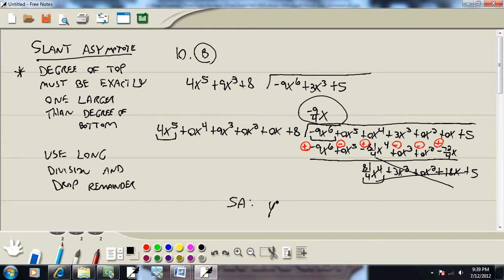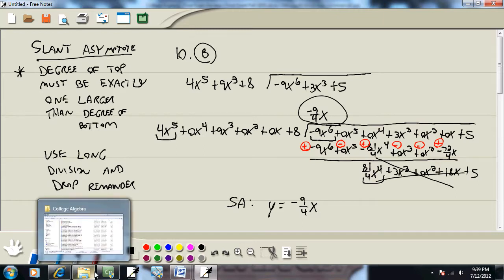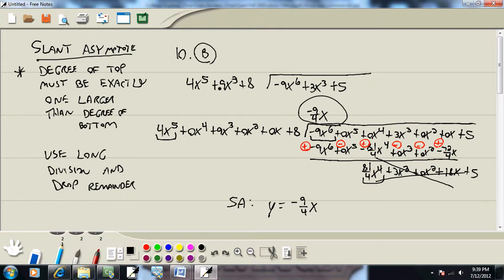So our answer is going to be this right here. So our slant asymptote would be y is equal to negative 9 fourths x. Now, again, that one is nasty. Don't panic thinking that this is the type of problem you have to solve. Just the important part is to remember use long division and drop the remainder. Because they weren't actually asking us to find it. They just wanted to identify which one had a slant asymptote.